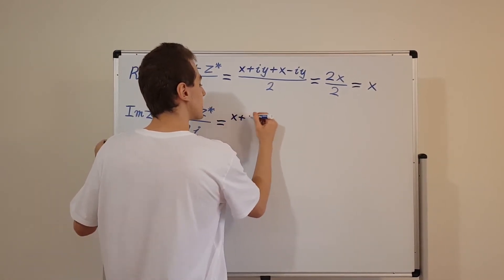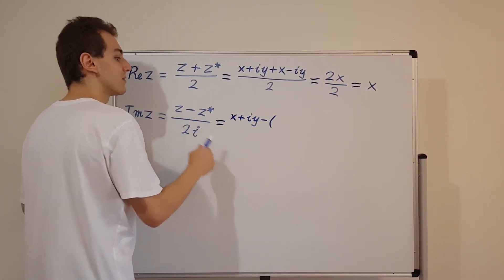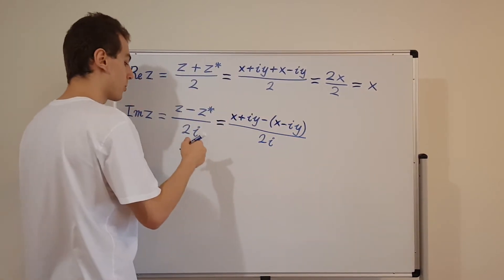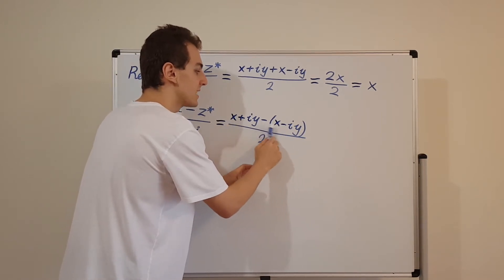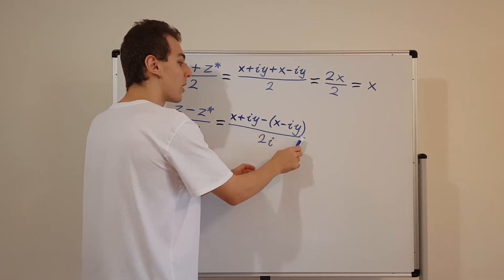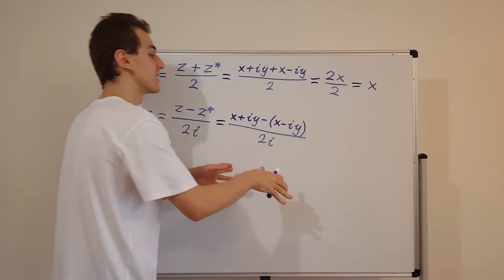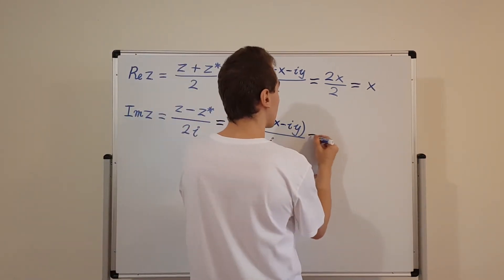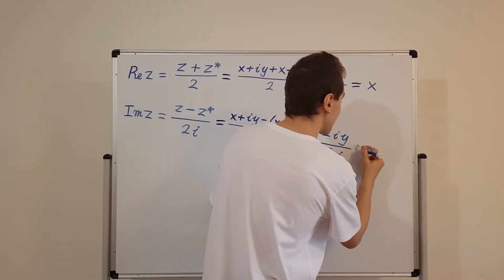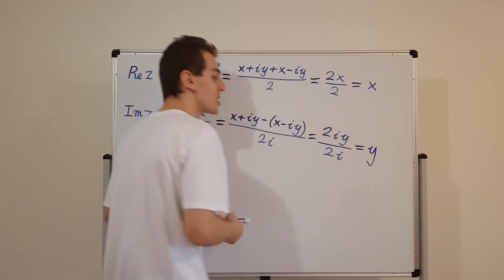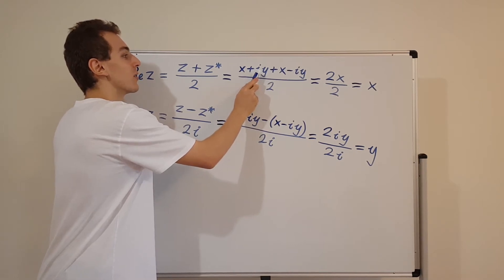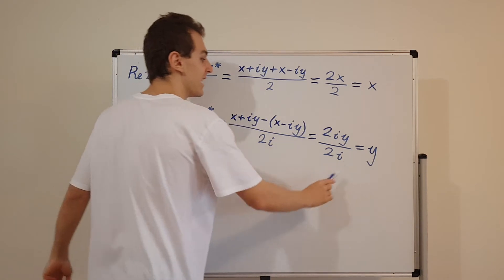So we have z = x + iy, and in brackets we subtract z* = x − iy, dividing by 2i. The minus sign distributes over both terms: the x and minus x cancel each other out, and the minus iy becomes plus iy. We're left with 2iy divided by 2i — you can see where the 2i comes from — and that gives us y. And we defined y to be the imaginary component of z, where y multiplies the imaginary unit i.